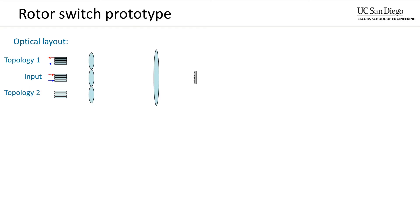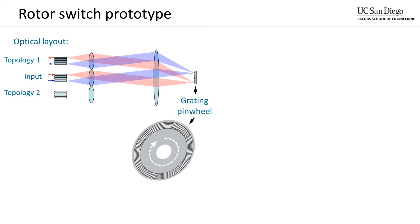At UCSD, we are going to be connecting Corundum to an experimental optical switch called the rotor switch or pinwheel switch. This switch is based on free space optics and it uses diffraction gratings that are patterned on what is essentially a hard drive platter to select between several network configurations. Five fiber arrays, each with 61 channels, are used to connect the switch to the end hosts as well as to implement four network configurations. The central array provides 27 inputs and 27 outputs that are connected to FPGA boards in the hosts. The other four arrays are looped back to form each of the network configurations. As the disk rotates, it will cycle through the network configurations in sequence.